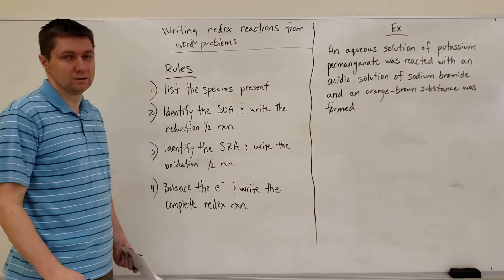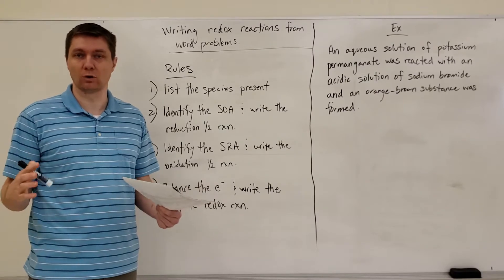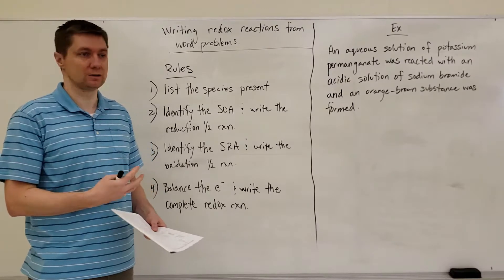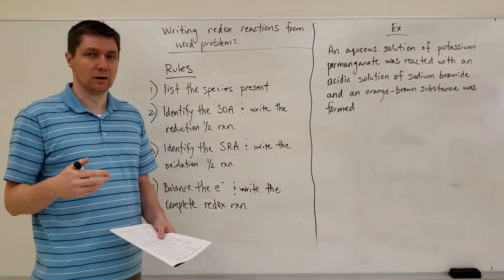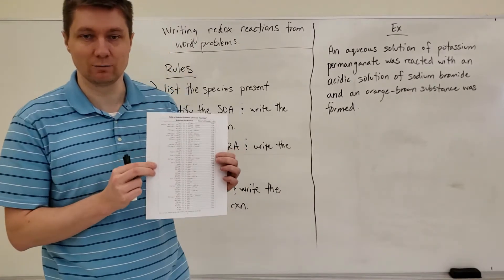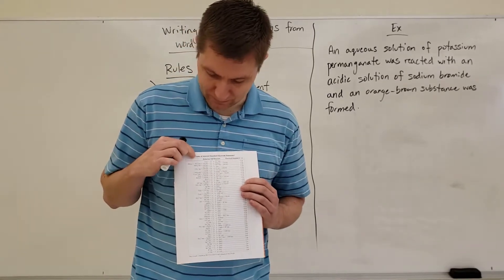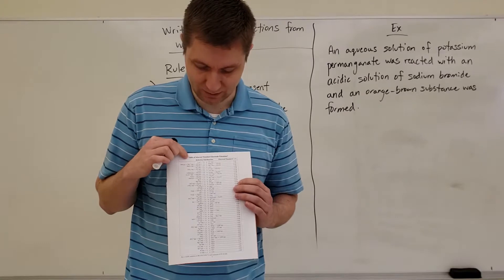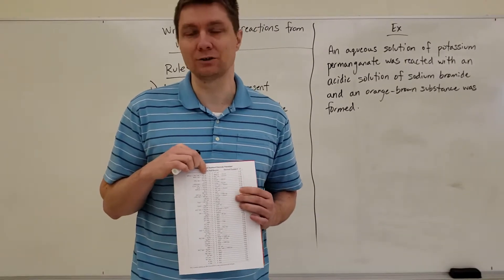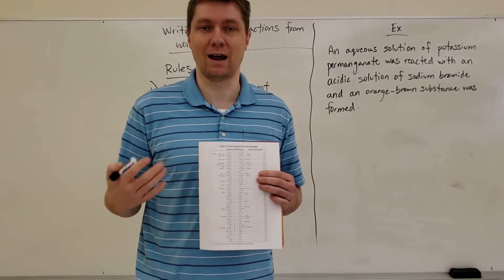The next topic we're going to talk about is writing balanced redox reactions from a word problem. Before we jump into the rules on the board, you need to go into your data booklet and turn to page 7. This table is a table of selected standard electrode potentials — a reduction half reaction table. Essentially, it's just a table of reduction half reactions.